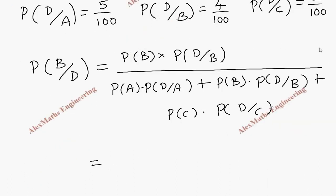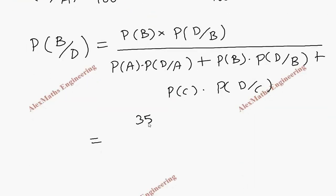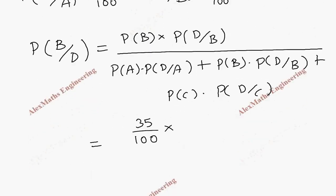Now, we have to substitute all the values. P(B) which is given here as 35 by 100. So, 35 by 100 into the value of P(D/B) is 4 by 100.